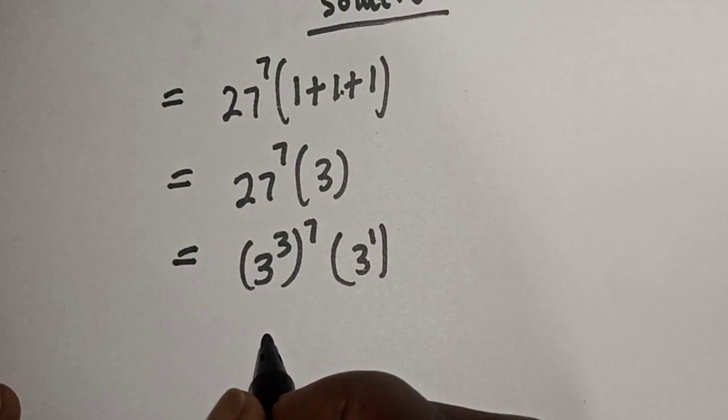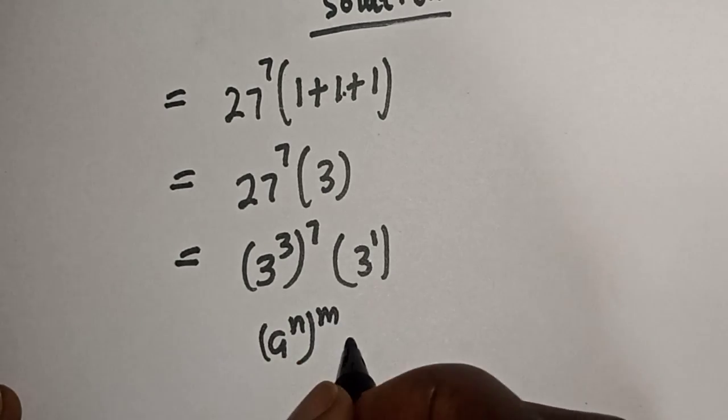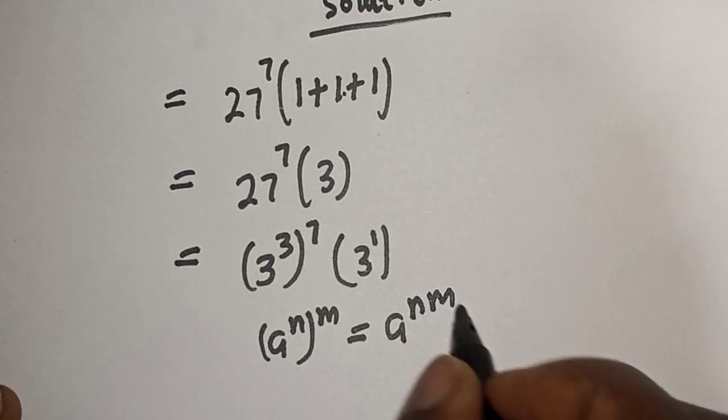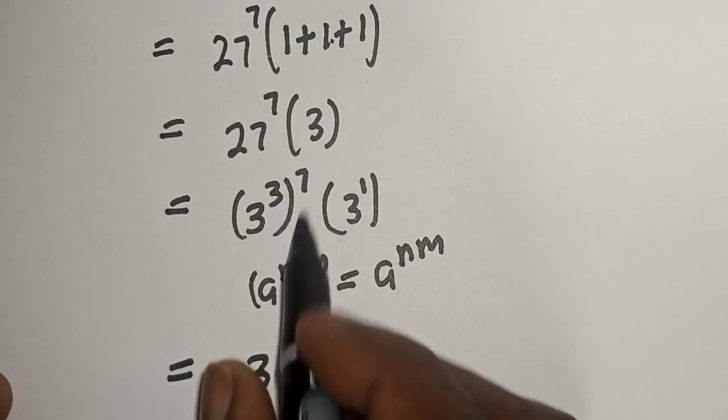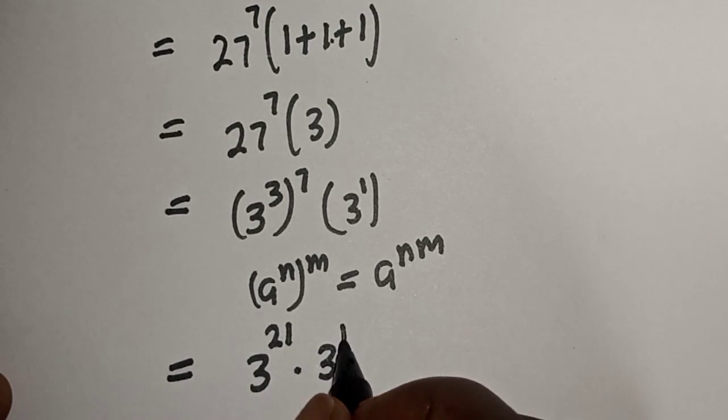Now, take note of this rule that if you have a raised to power n raised to power m, this is also equal to a raised to power n m. So, this is equal to 3 raised to power 21 multiplied by 3 raised to power 1.